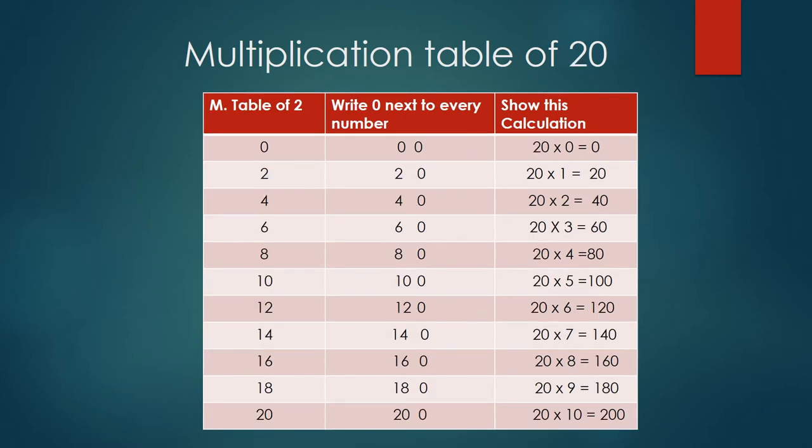Now the same principle is applied for learning multiplication table of 20. Tell the children instead of writing 1, 2, 3, 4, they write tables of 2: 2×0=0, 2×1=2, 2×2=4, 2×3=6, 2×4=8, 2×5=10, 2×6=12, 2×7=14, 2×8=16, 2×9=18, 2×10=20.